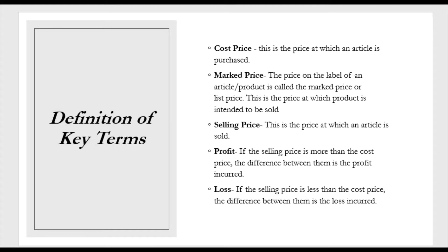Another key term is mark price. The price on the label of the article or product is called the mark price or list price. This is the price at which a product is intended to be sold. For example, when you go into the supermarket to purchase buns and you look on the shelf where the buns are packed, you will see the price for the buns — those prices are called the mark price.